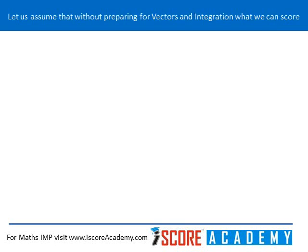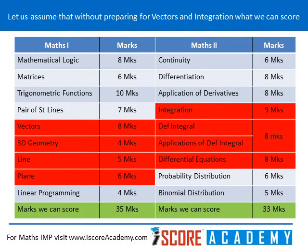Now let us assume that without preparing for vectors and integration group what we can score. As you can see the chapters in red in maths 1: vectors, 3D geometry, line and plane, and in maths 2: integration, definite integral, application of definite integral, and differential equation. These chapters we are going to skip and still we can score 35 marks in maths 1 and 33 marks in maths 2.